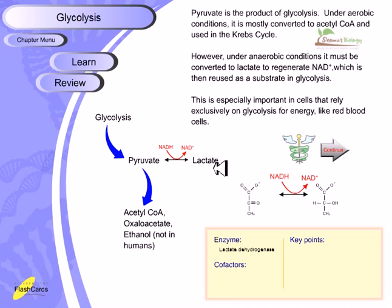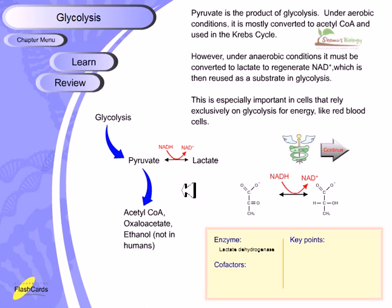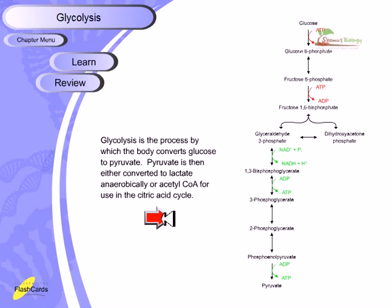After glycolysis, there is the fermentation process. Under aerobic conditions, pyruvate is converted to acetyl-CoA for use in the Krebs cycle (TCA cycle). However, under anaerobic conditions, pyruvate must be converted to lactate to regenerate NAD⁺, which is required for the oxidation stages of glycolysis to continue.